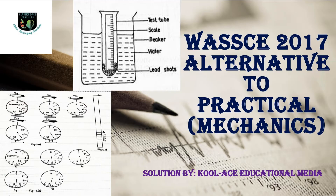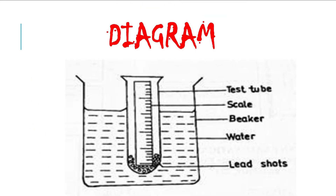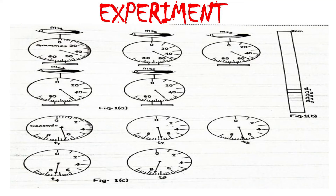In this particular experiment we have the following apparatus: a beaker, water, lead shots, a test tube with scale, a beam balance, and a stopwatch or stop clock as available. We have here the diagram for this particular experiment, and this diagram tells us about what the procedure would be.